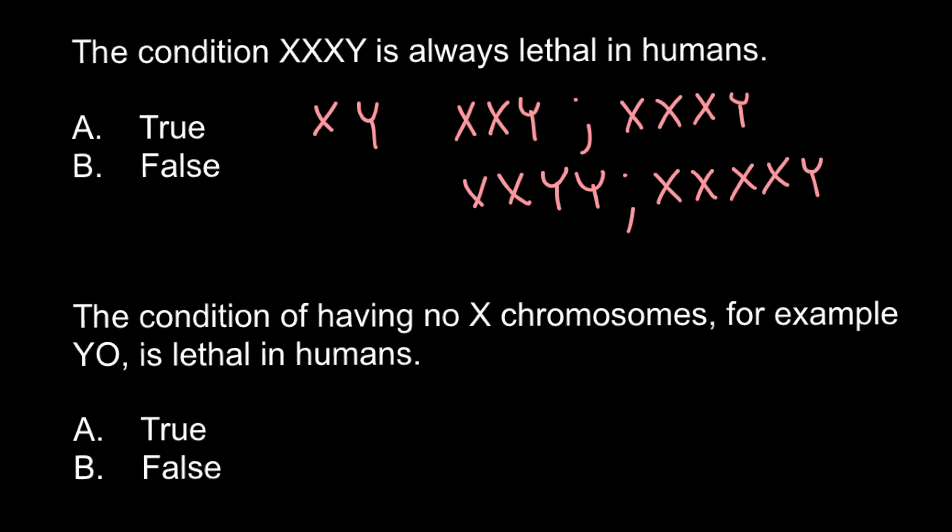You probably know that even trisomy would cause severe genetic disorders in humans. For example, trisomy of the chromosome 21 leads to Down syndrome. But this is different case with sex chromosomes.